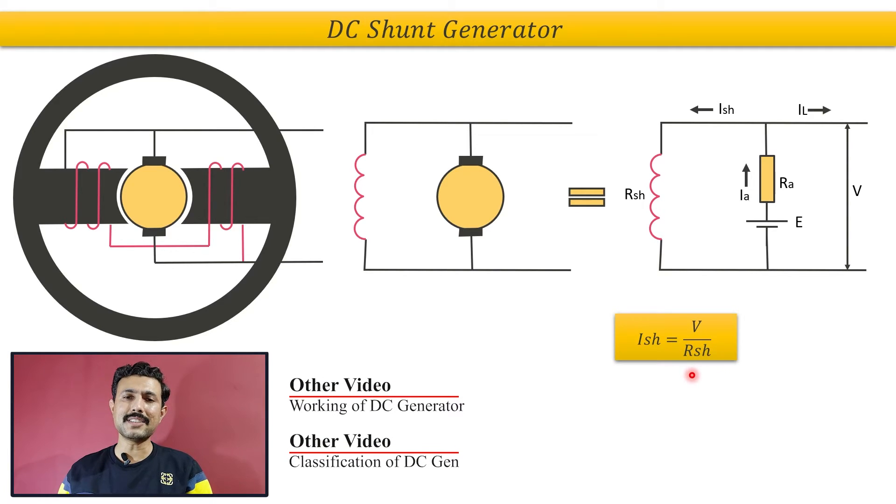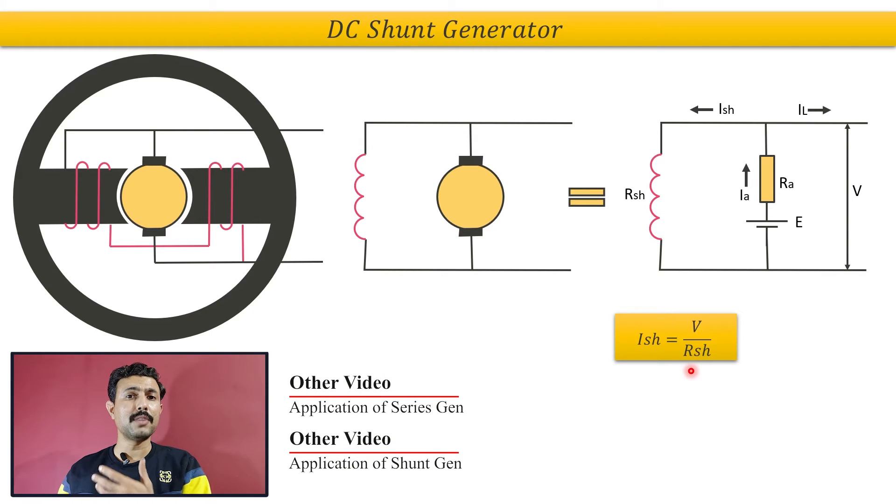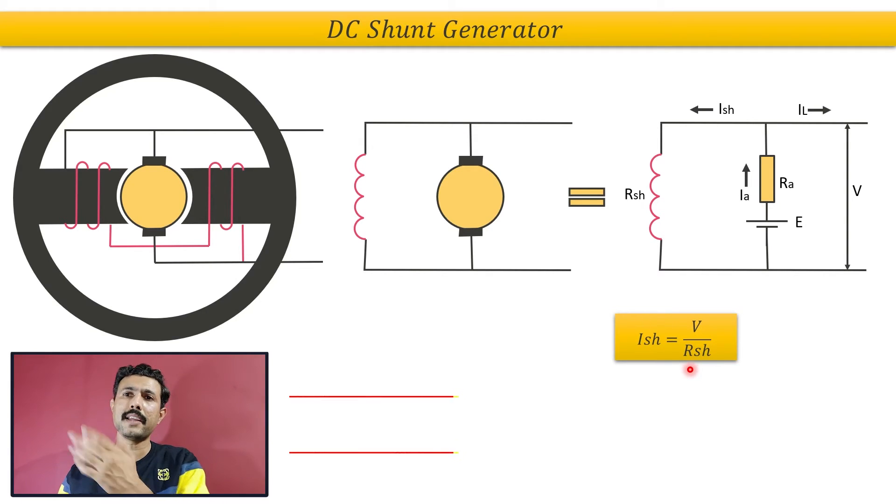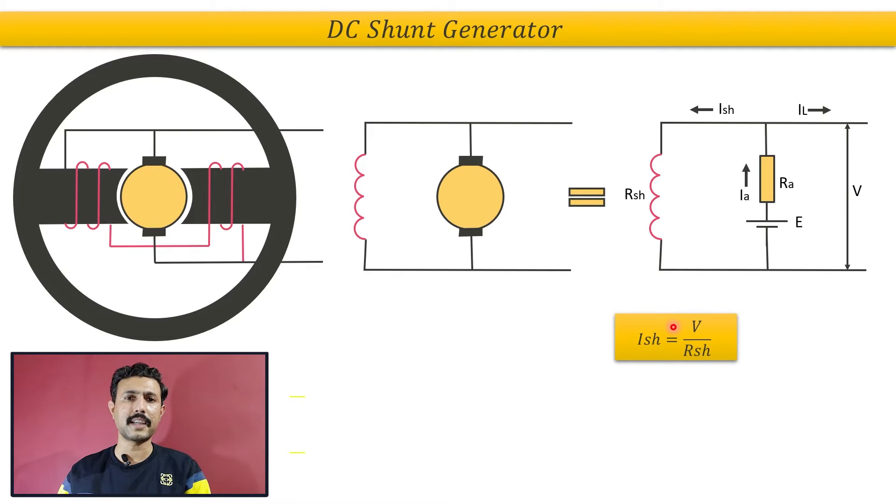In a practical generator you can measure it using a multimeter, or if you are calculating numericals then in the numerical, shunt field resistance is already given. So from these two quantities you can calculate the Ish, shunt field current.